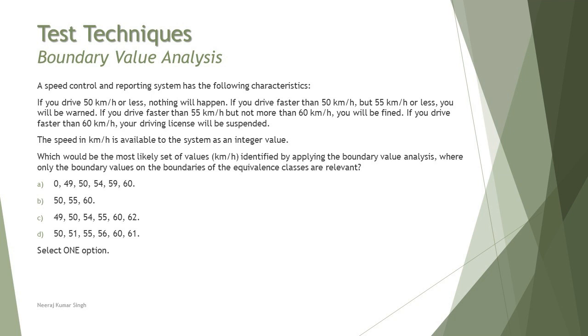A speed control and reporting system has the following characteristics: if you drive 50 km per hour or less, nothing will happen. If you drive faster than 50 but 55 km per hour or less, you will be warned. If you drive faster than 55 but not more than 60 km per hour, you will be fined. If you drive faster than 60 km per hour, your driving license will be impounded or suspended.